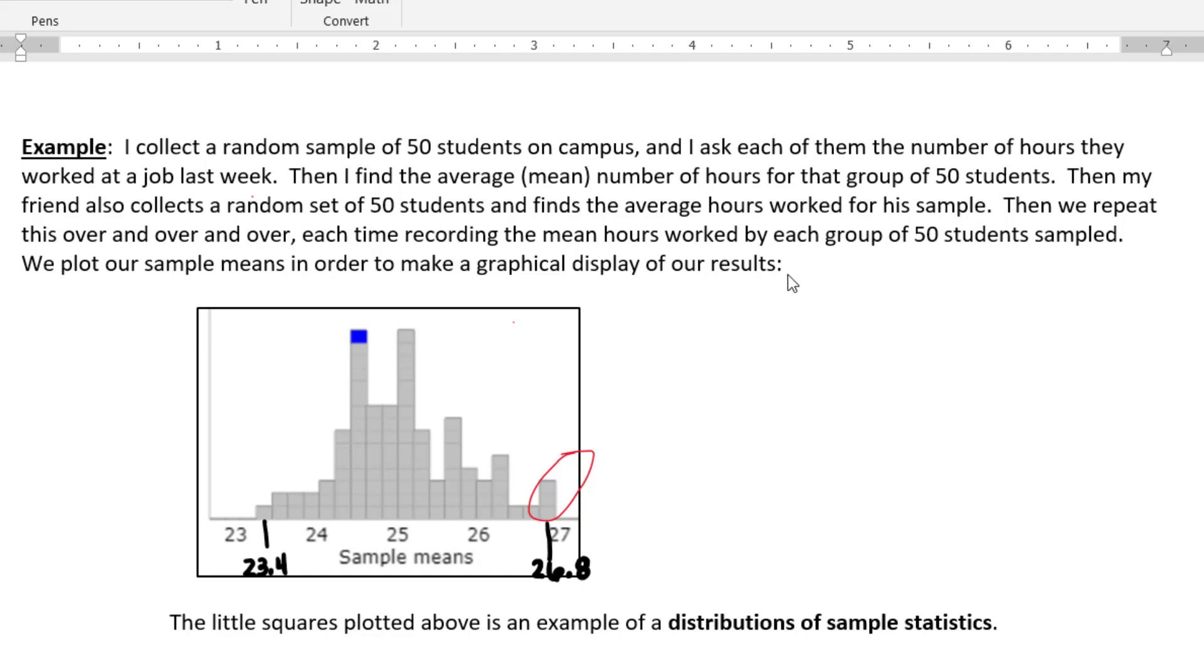Now the dot plot I have shown below doesn't have dots. It has little squares but it's the same idea. I just took this from a certain website which we're going to get familiar with in a future section called Rossman Chance applets, but this one comes up with little squares instead of dots but it's the same idea.